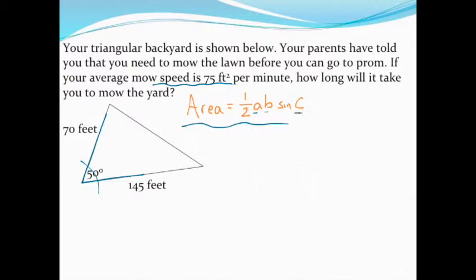I don't care what letter you want to call those, as long as you have the two sides with the angle included in between them. Let's go ahead and get those values plugged into this formula to find the area of this triangular backyard. One half times our two sides, which are 70 feet and 145 feet, and then multiplied by the sine of the included angle, the sine of 50 degrees.